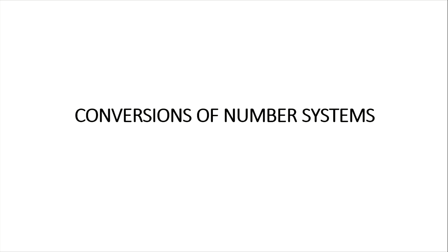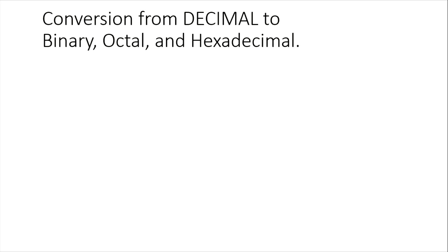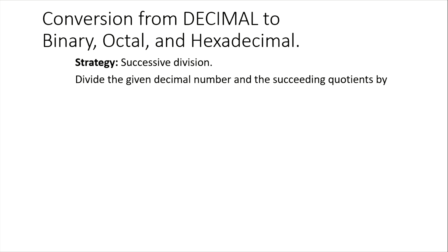Conversions of number systems. We'll start with conversion from decimal to binary, octal, or hexadecimal. Our strategy here is only by successive division. We will divide the given decimal number and the succeeding quotients by 2 for binary, 8 for octal, and 16 for hexadecimal.